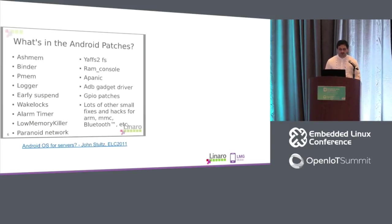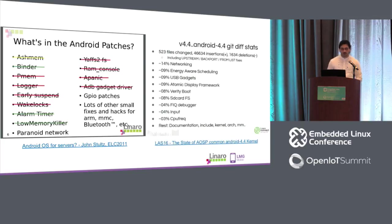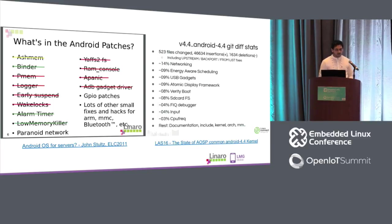Now, the Android patch set evolution. This is the talk John Stultz gave in 2011 at ELC — these are the patch sets carried in Android Common: Ashman, Binder, Wakelocks, and all the usual suspects. Fast forward to 2016 — that's the talk I gave two years back. All the red lines, all those patch sets, are dropped. We no longer use them in Android kernel. The green lines are patches that actually got upstream, and yellow — Ashman moved to the staging tree. With 4.4, we saw additions: atomic display framework, verified boot, SD card FS, interactive governor, and energy-aware scheduler was new at that time.